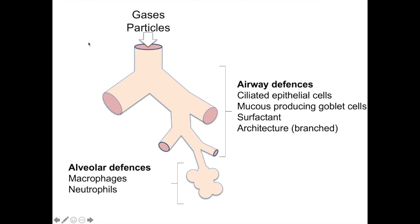When we inhale gases and particles that shouldn't be there, we have a number of defense mechanisms to remove them. Firstly, the epithelial cells lining the airway contain cilia and mucus produced by goblet cells, as well as surfactant, which is a type of detergent. These help trap particles in the mucus. In addition, the cilia beat slowly, which moves the mucus up the airway until it reaches the throat and can be swallowed.